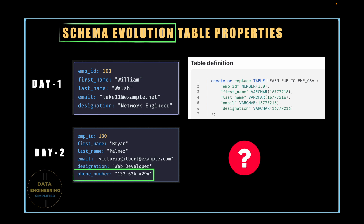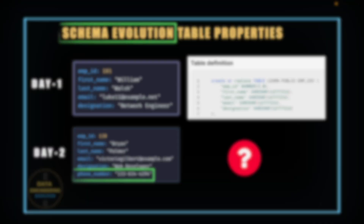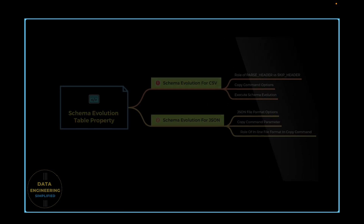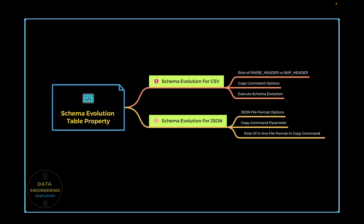The structure of a table in Snowflake can evolve automatically to support the structure of new data received from data sources, and that's what we are going to explore in this video. In this quick demo, we will try the schema evolution table property for a CSV data file as well as for a JSON data file.